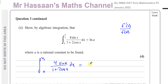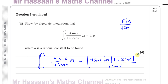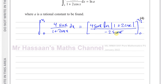The integral between 0 and pi over 3 of 4 sine x over (1 plus 2 cosine x) with respect to x integrates as: 4 sine x times the ln of the modulus of (1 plus 2 cosine x). But then I have to divide by the differential of what's inside the function. If I differentiate 1 plus 2 cosine x, I get minus 2 sine x. The sine x cancels out, so I have 4 divided by minus 2, giving minus 2 times ln of the modulus of (1 plus 2 cosine x), evaluated between 0 and pi over 3.